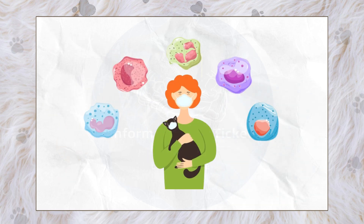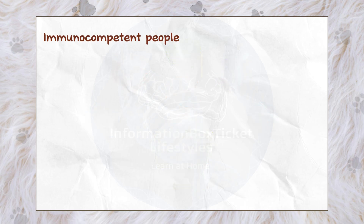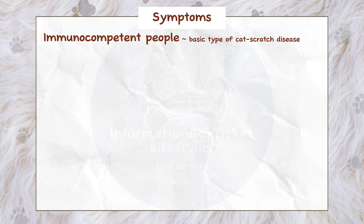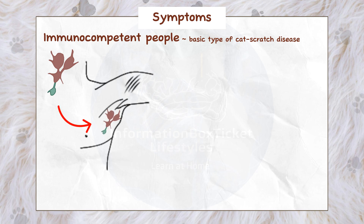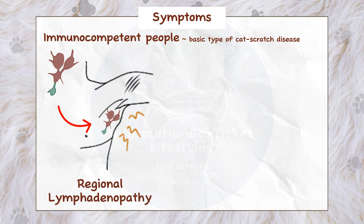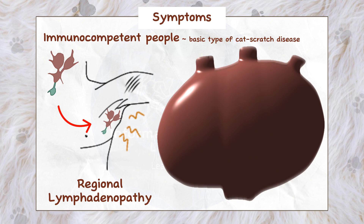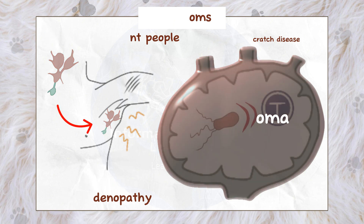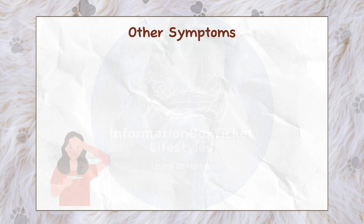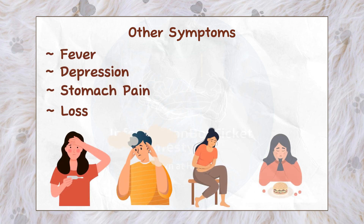Humans' immune systems are responsible for their reaction to infection. Immunocompetent people acquire a basic type of cat scratch disease. The most distinguishing sign is the enlargement of a single or a group of lymph nodes, generally in the armpits, which is exceedingly painful to the touch. This is known as regional lymphadenopathy, and it is caused by Bartonella henselae causing an ongoing T-cell response, resulting in an area of inflammation known as granulomas in the lymphoid tissue. Other symptoms include fever, depression, stomach pain, and a loss of appetite.